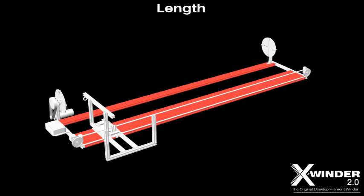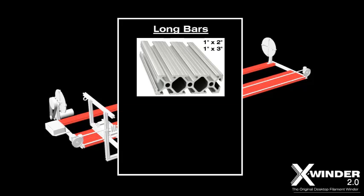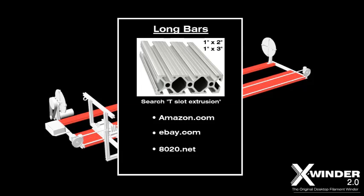The X-Winder does not ship with the long bars. This lowers the kit and shipping costs and also gives you the flexibility to make the X-Winder frame as long or as short as you'd like. The long bars should be either 1 by 2 inch or 1 by 3 inch aluminum T-slot extrusions, obtainable in lengths up to 20 feet from suppliers including Amazon, eBay, and 8020. For a 6-foot long X-Winder, you'll spend about 100 US dollars for the long bars.